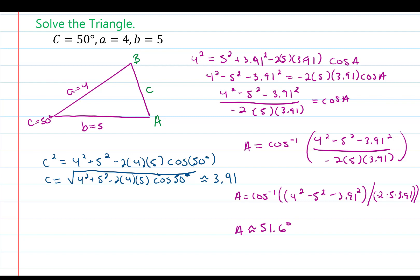Finally, we find angle B: angle B equals 180 degrees minus the known angle of 50 degrees minus the known angle of 51.6 degrees, giving us 78.4 degrees. Alright guys, good luck!